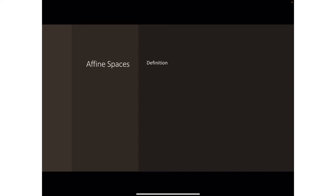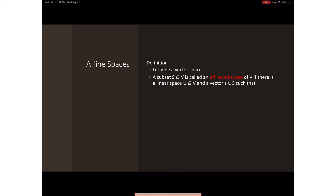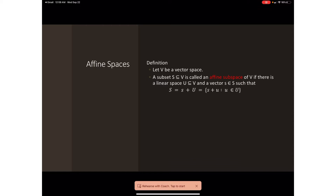As usual we start with a vector space. Let V be a vector space. A subset of a vector space is called an affine space if it can be represented as a translation of some linear subspace. So a subset S of V is called an affine subspace of V if there is a linear subspace U of V and a vector s in capital S such that S equals s plus U.